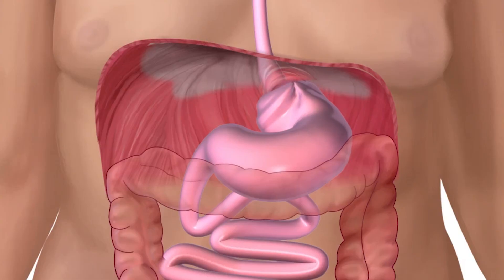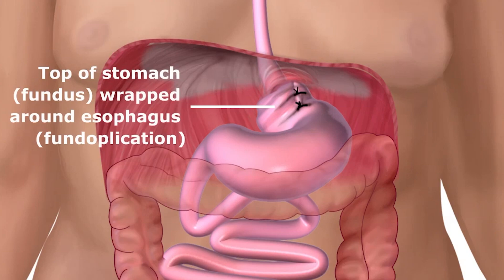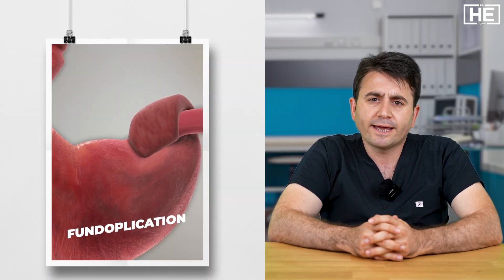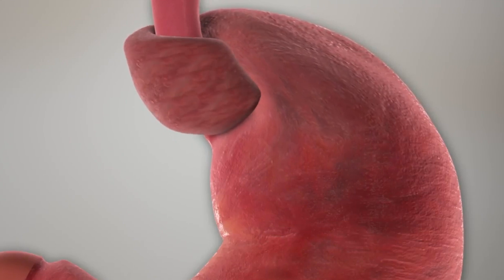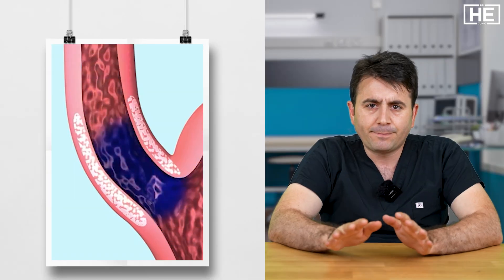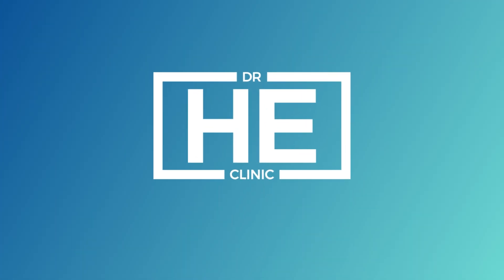Herniation of the stomach to the chest through this hole is a key concern. After dissecting the hiatus, the surgeon fixes that area with stitches, bringing a narrowing of the hiatus. After that, the upper part of the stomach will be prepared for fundoplication. Fundoplication itself is the part of the surgery in which the surgeon creates a wrap with the upper part of the stomach over the lower part of the esophagus.